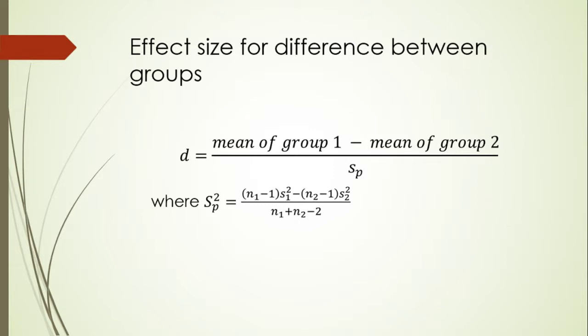Effect size for difference between groups can be calculated as mean of group 1 minus mean of group 2 divided by pooled standard deviation, where the pooled variance formula is given as (n1-1)s1² + (n2-1)s2² divided by n1+n2-2. We have to take the square root of s_p² to make it as standard deviation for the computation of effect size for difference between groups.